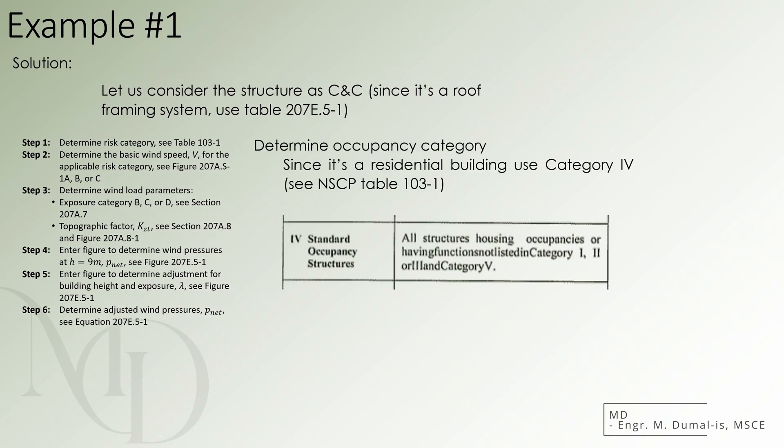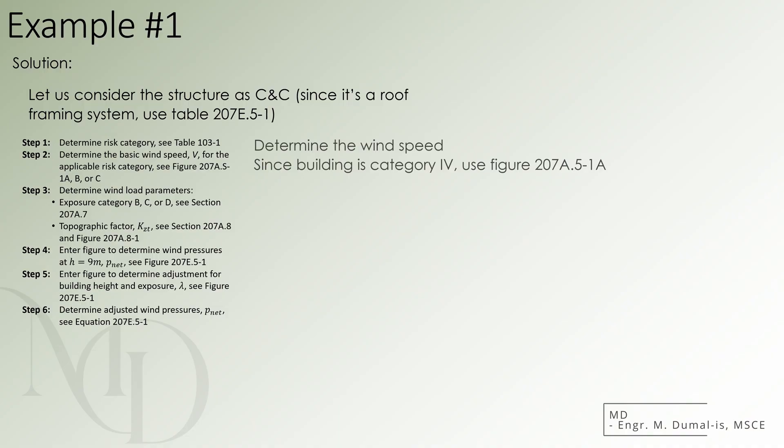In the problem statement, the building is said to be a residential structure. As per Table 103-1, the structure may then be classified under occupancy category of 4. The exposure category, on the other hand, can also be inferred as category B since we already know that the site is located in Baguio City, a highly urbanized area.